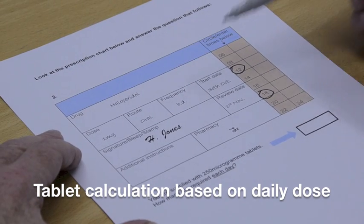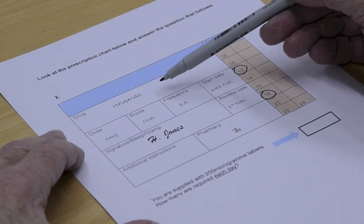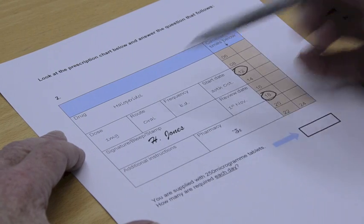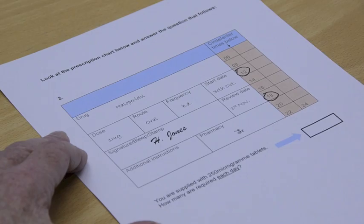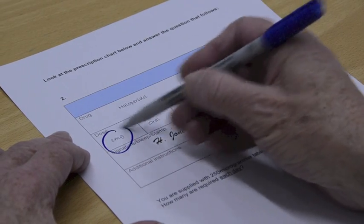OK, this is another mock prescription, this time for another drug, haloperidol. And again, we look straight away at the dose, which is one milligram. That's fairly straightforward.